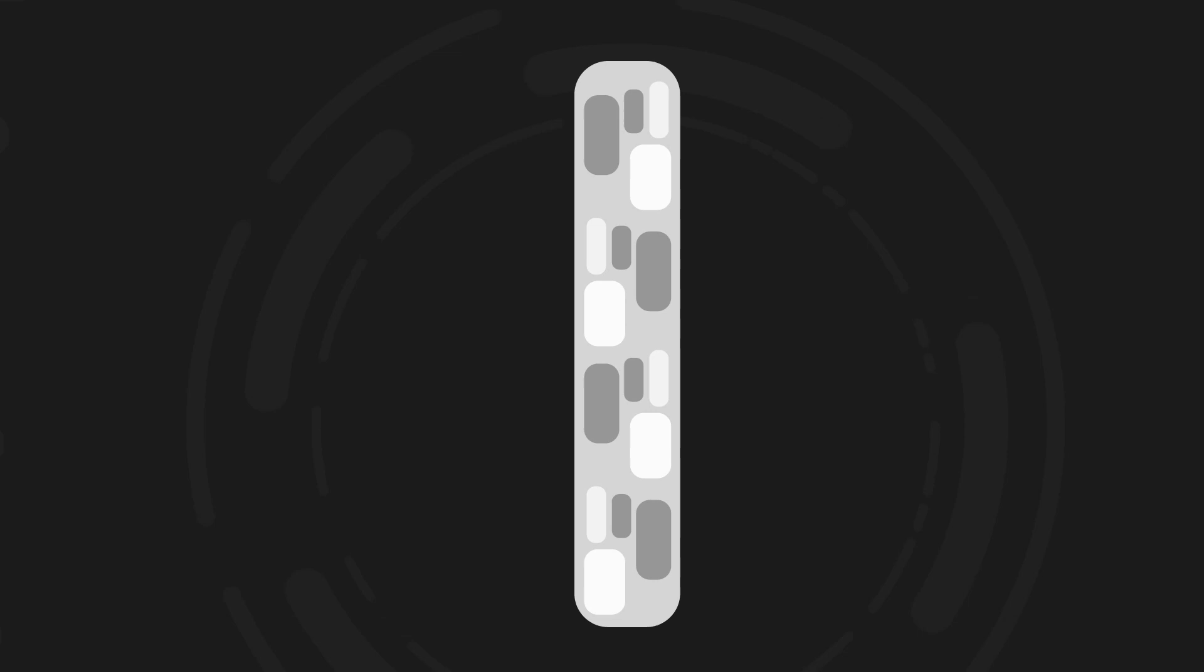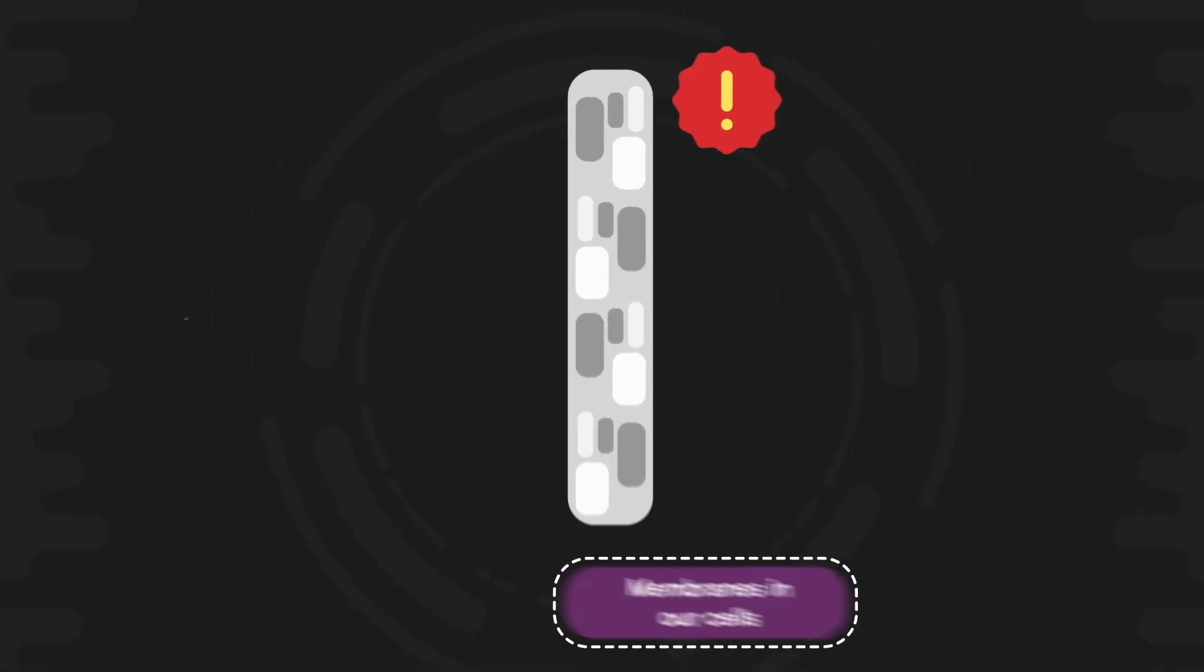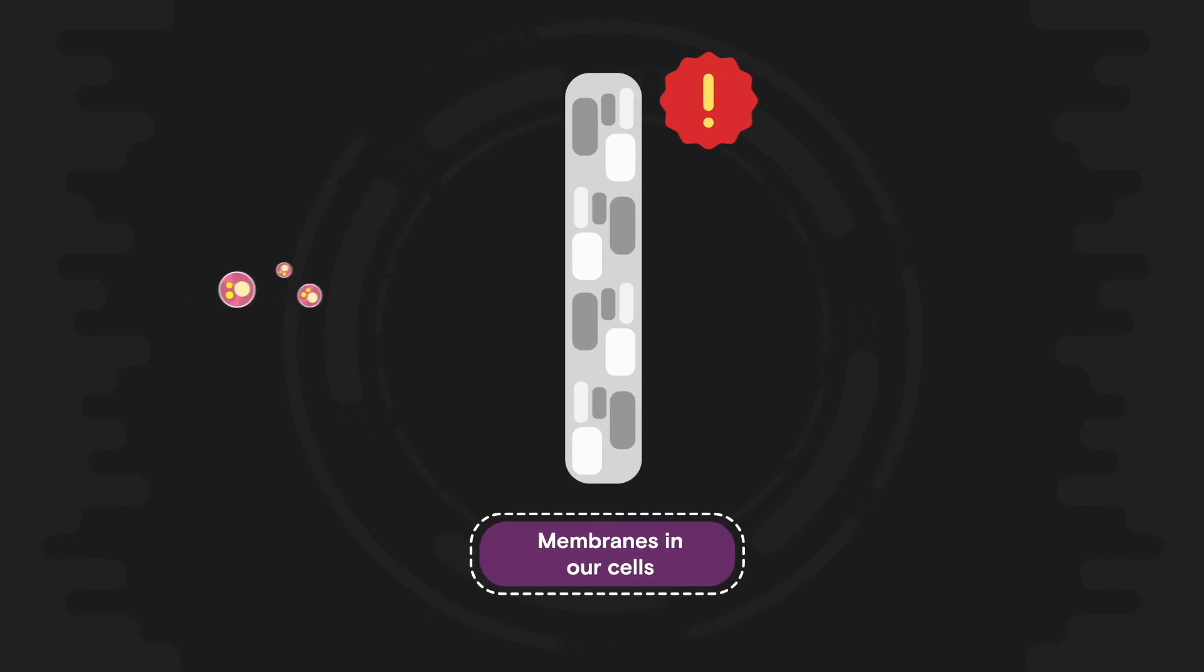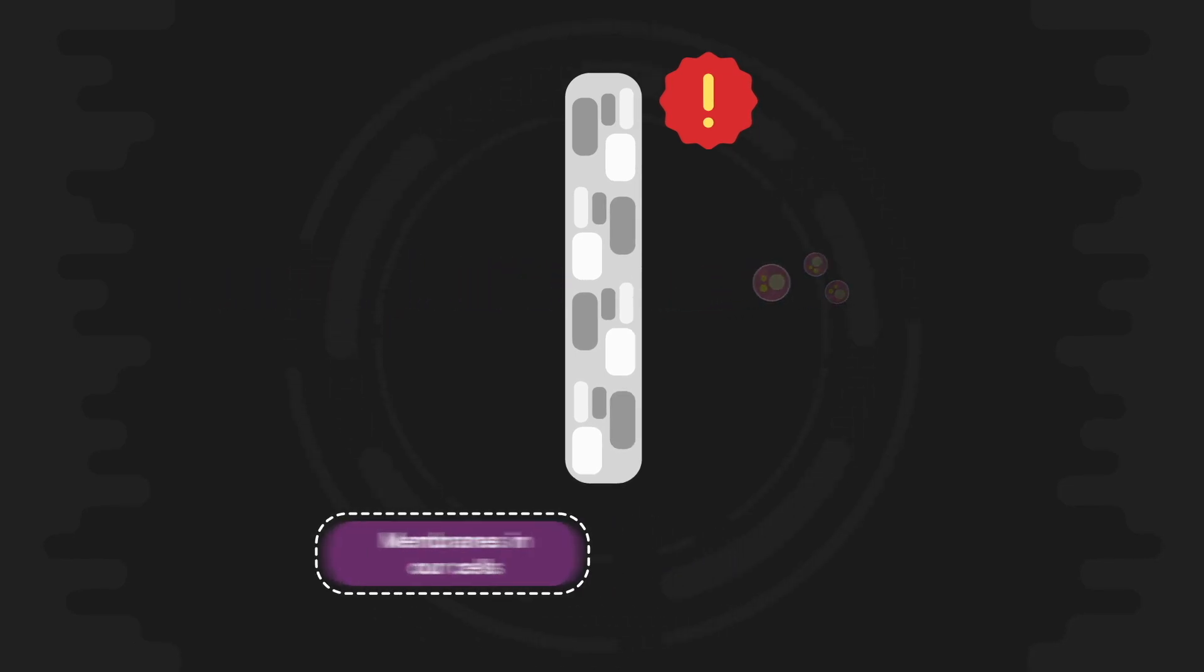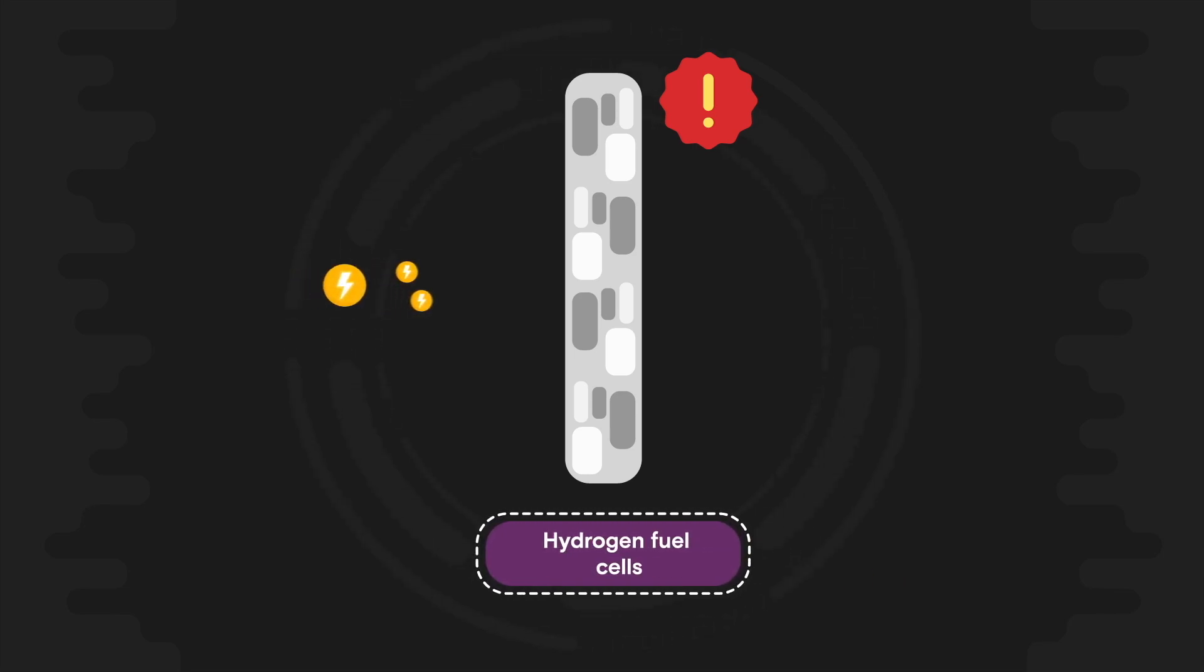Membranes are ubiquitous and they are a really crucial component of many complex physical processes. There are membranes in our cells that regulate the transport of nutrients inside and out. There are membranes in hydrogen fuel cells that regulate the transport of protons and electrons. And of course there are membranes used for the separation and purification of vital resources like water.